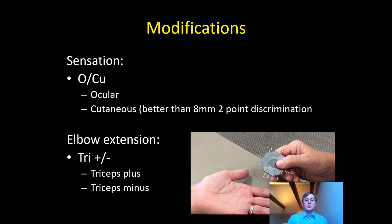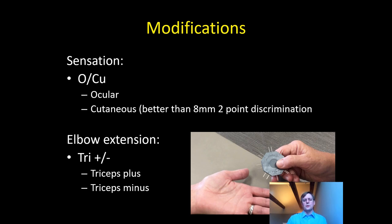His work prior to tetraplegia surgery was based on 8mm two-point discrimination being an approximation for your ability to have proprioceptive control of your hands — in other words, to be able to use your hands without having to look at what they're doing. In terms of hand functionality that's a fairly critical point, particularly if you have a hand on the other side that's more useful. Then elbow extension, or triceps function, became added as a final modification.